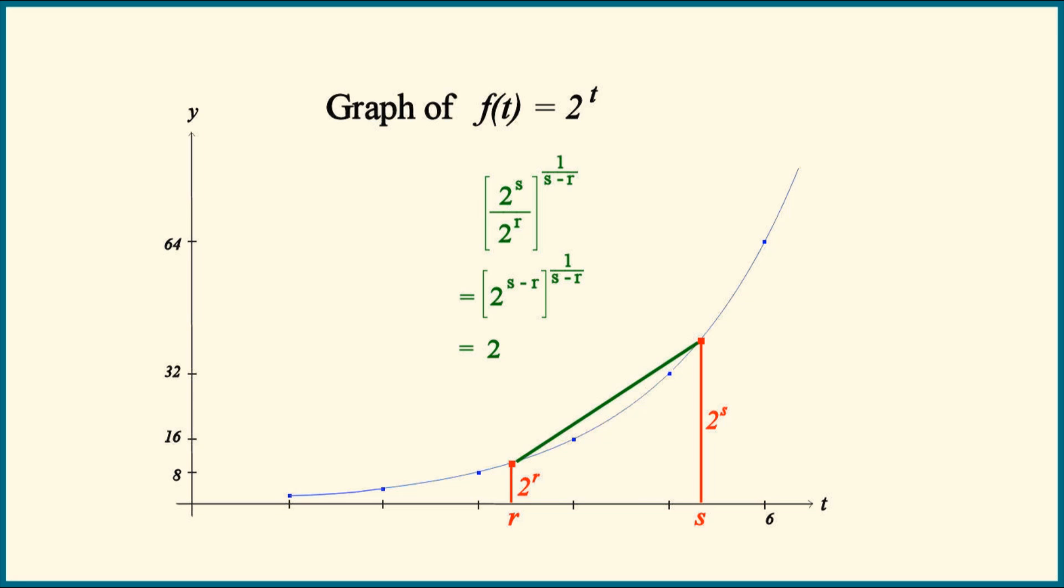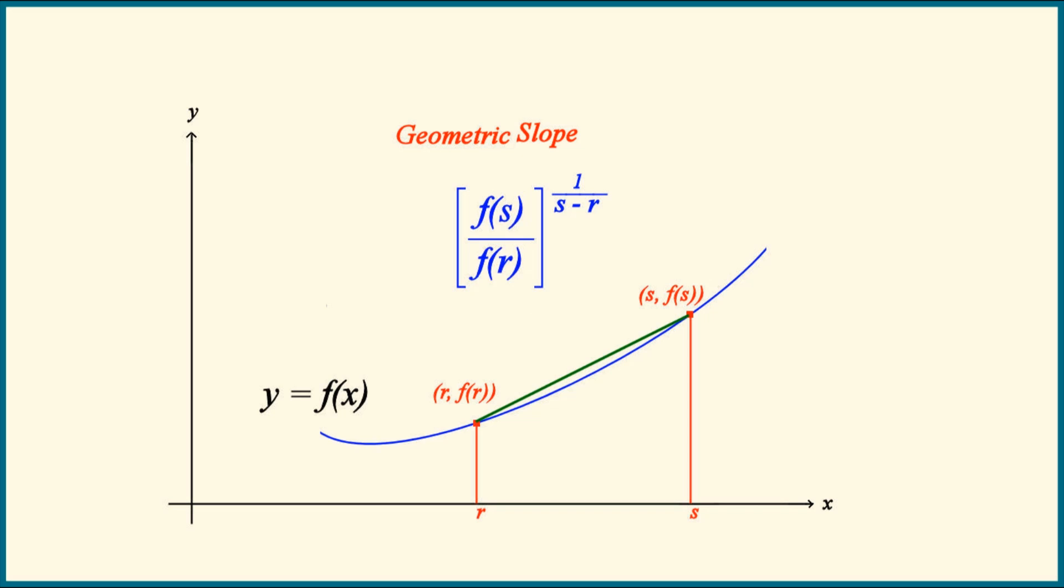That means if we guessed correctly, the geometric slope of a function should look like this. And the geometric derivative would be this limit.